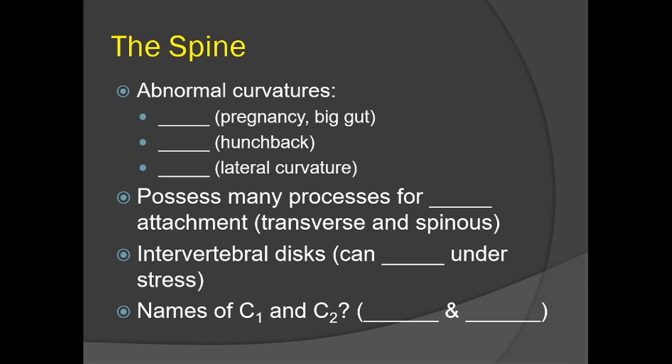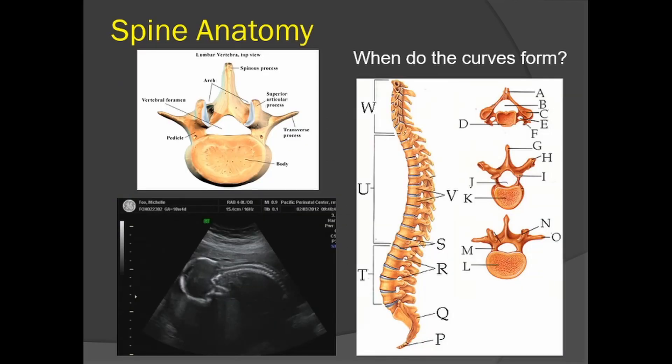C1 and C2 — cervical vertebrae one and two — have special names. C1 is called the atlas, named after the Greek figure who supports the weight of the earth on his shoulders. C2 is called the axis, which enables the head to pivot, allowing us to shake our head 'no.' You can see in the upper-left image the spinous process projecting dorsally and the transverse processes heading out to both sides.